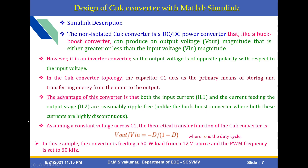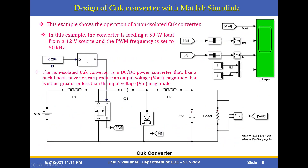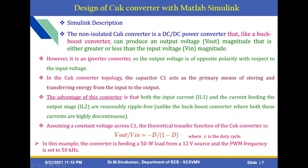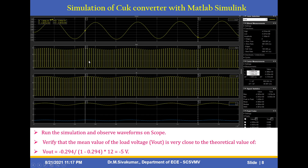In this example, the converter is feeding a 50-watt load from a 12-volt source and the PWM frequency is set to 50 kHz. After simulation, we get this output. You can run the simulation and observe these waveforms on the scope. You can verify that the mean value of the load voltage Vout is very close to the theoretical value of −D / (1 − D).